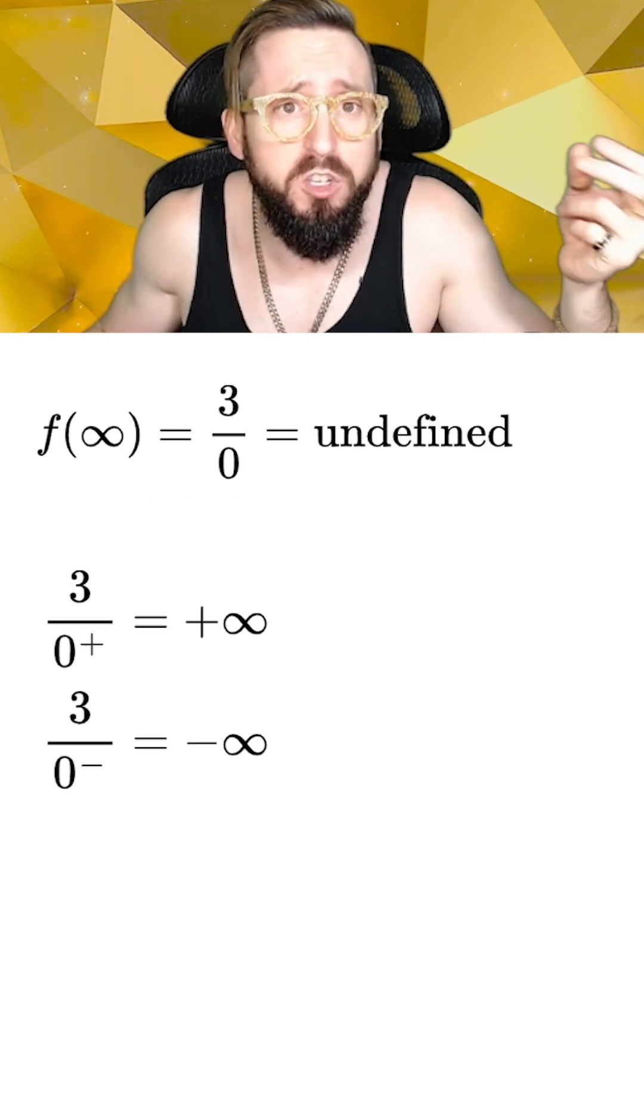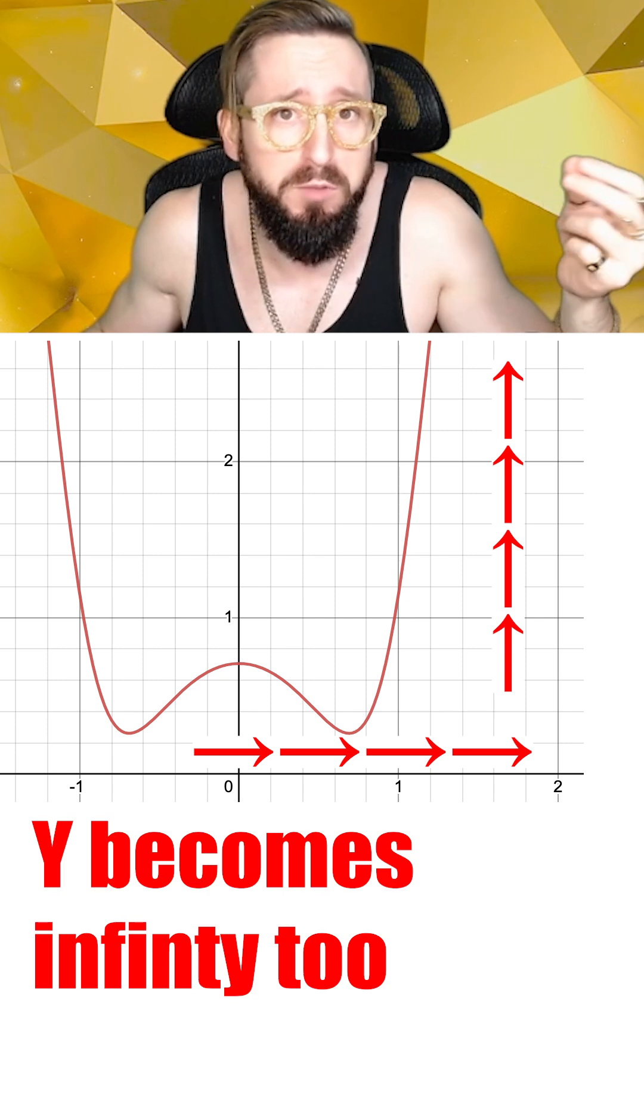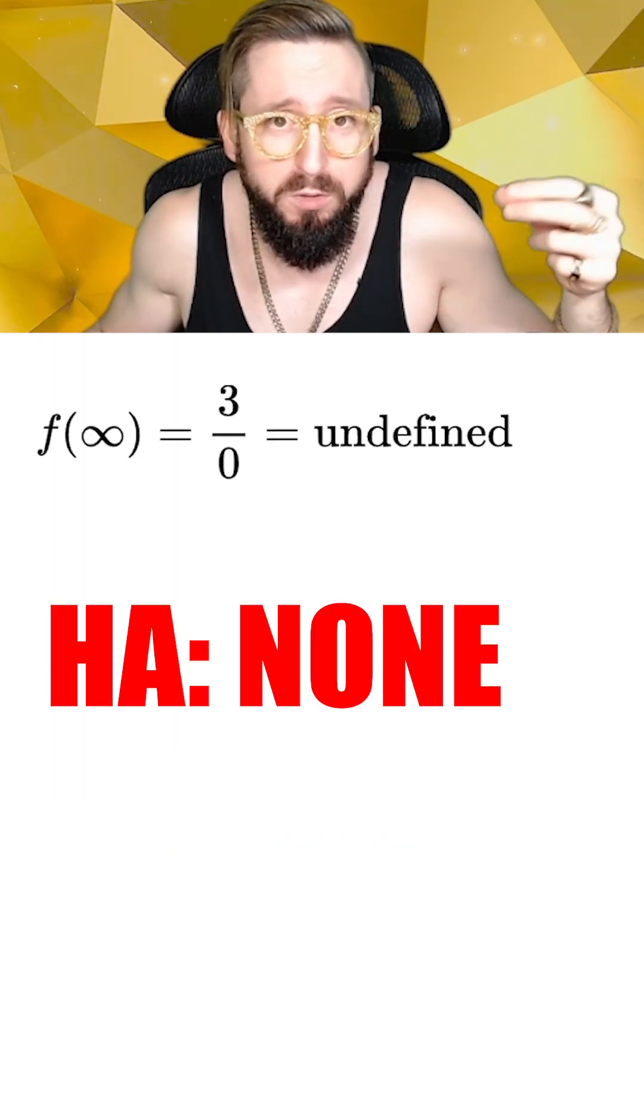But in either case, the function does not approach a real number, and as we go really far to the right, x becomes infinity. So we can say that there are no horizontal asymptotes, and you're done.